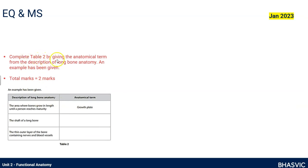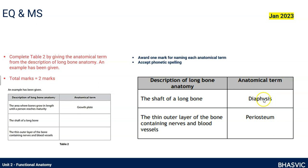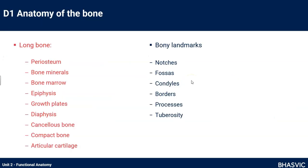Last question: a table gives anatomical terms to describe long bone anatomy, with an example showing that a growth plate is the area where bones grow in length until a person reaches maturity. It asks for the term for two descriptions: the shaft of the long bone, and the thin outer layer of the bone containing nerves and blood vessels. The answers are diaphysis and periosteum. You've just got to learn the structure and function of all those anatomical components. We've gone through the anatomy of the bone, looking at a long bone specifically and what all these things mean.